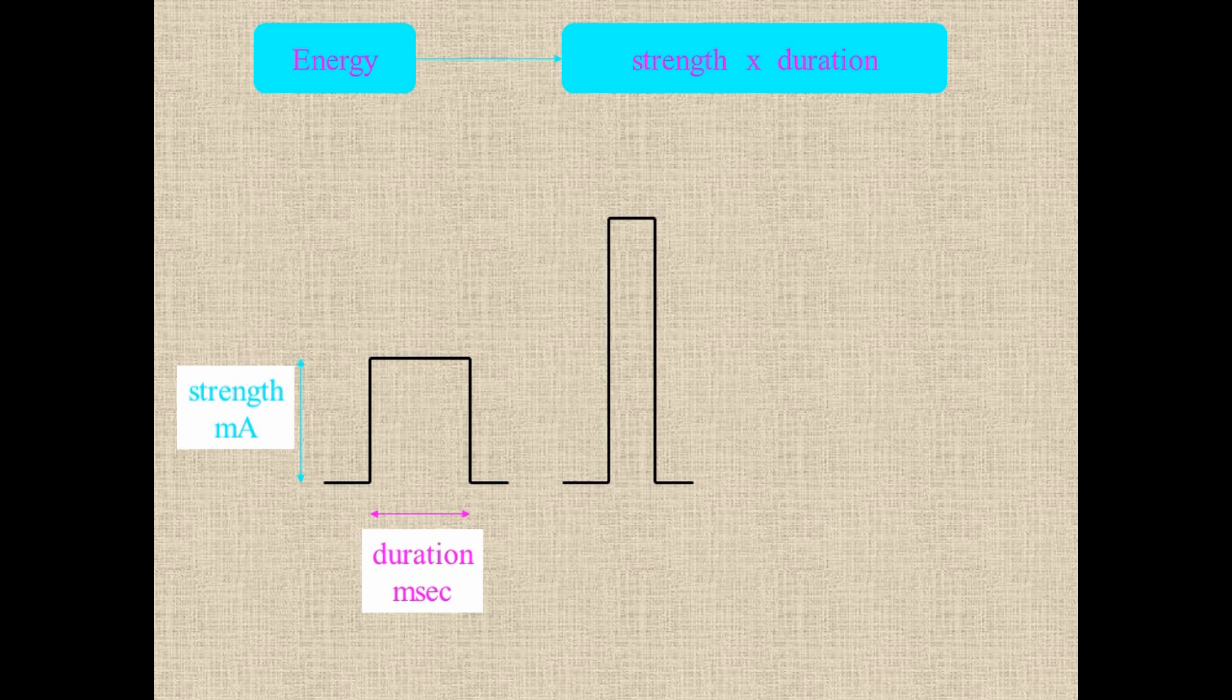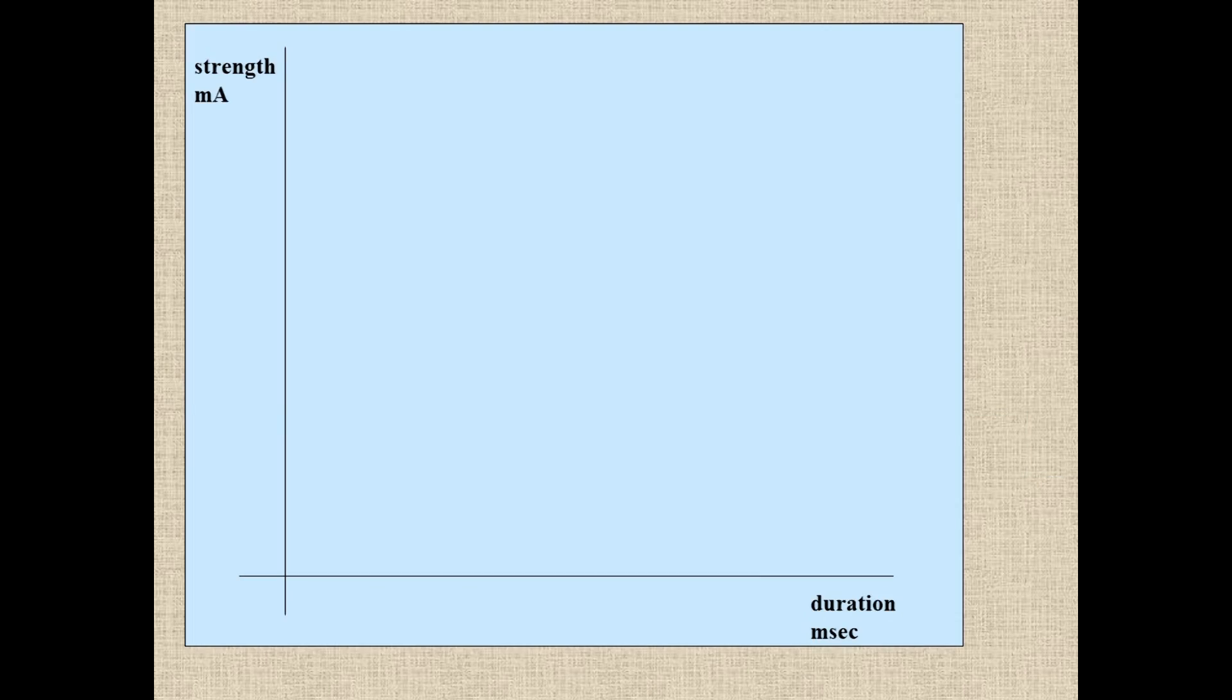And the physiologists have played to persist for many years. And what they will do is they will give you a short duration with a huge current or a longer duration with a lesser current to provide the same amount of energy to a nerve. And they'll use equipment to give you a strength duration curve.